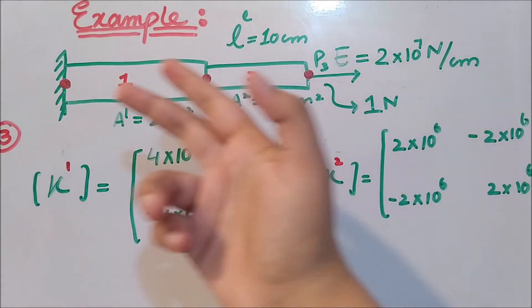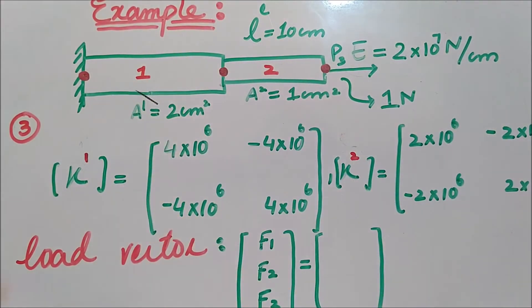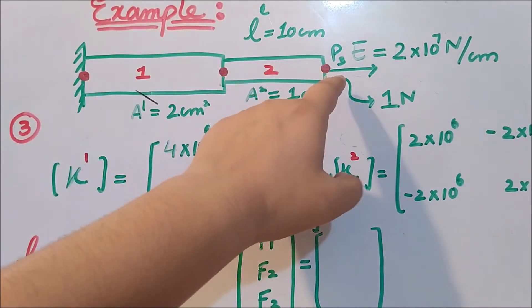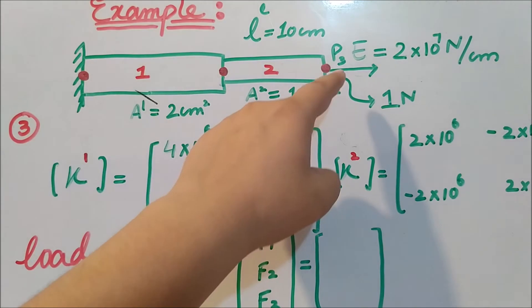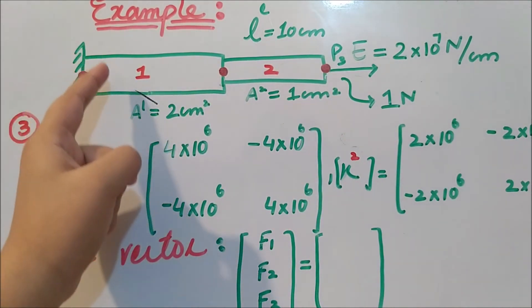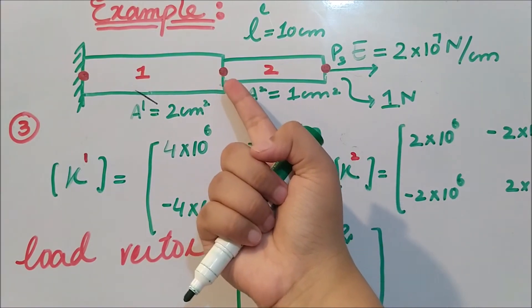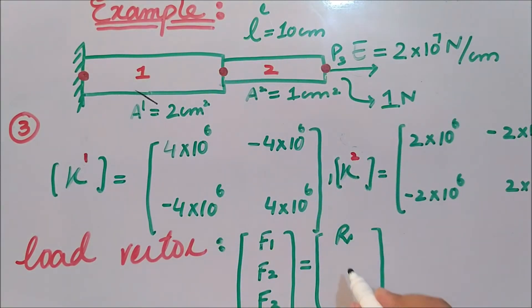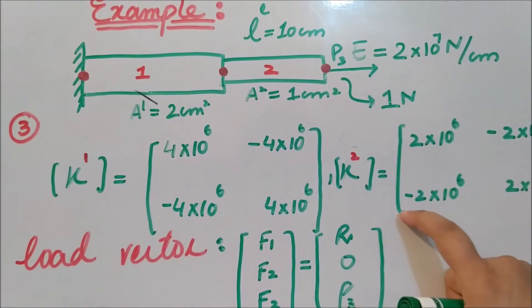Now we write the load vector. F1, F2, F3 represent the net forces at nodes 1, 2, and 3 respectively. At node 1 the bar is fixed so there is a reaction force R. At node 2 there is no external force, so F2 = 0. At node 3 the applied force is P3 = 1 Newton.